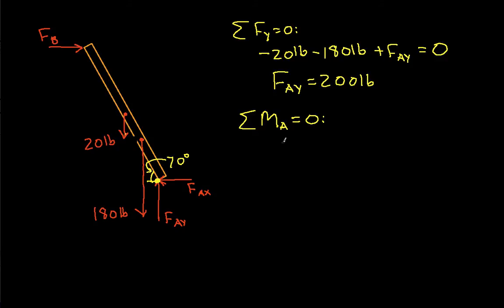The moments here, the moment due to the weight of the man will be 180 pounds times a moment arm. I've got a triangle here with a hypotenuse of 4 feet, and the base will be the moment arm. That base will be 4 feet times the cosine of 70 degrees.